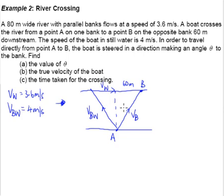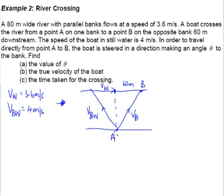So to summarize the triangle: our actual path goes from A to B - this is VB. We are aiming upstream to the left, so the water pushes us down and we end up at B. The aiming vector VBW is 4 meters per second, and the water vector VW is 3.6 meters per second. The triangle makes sense.